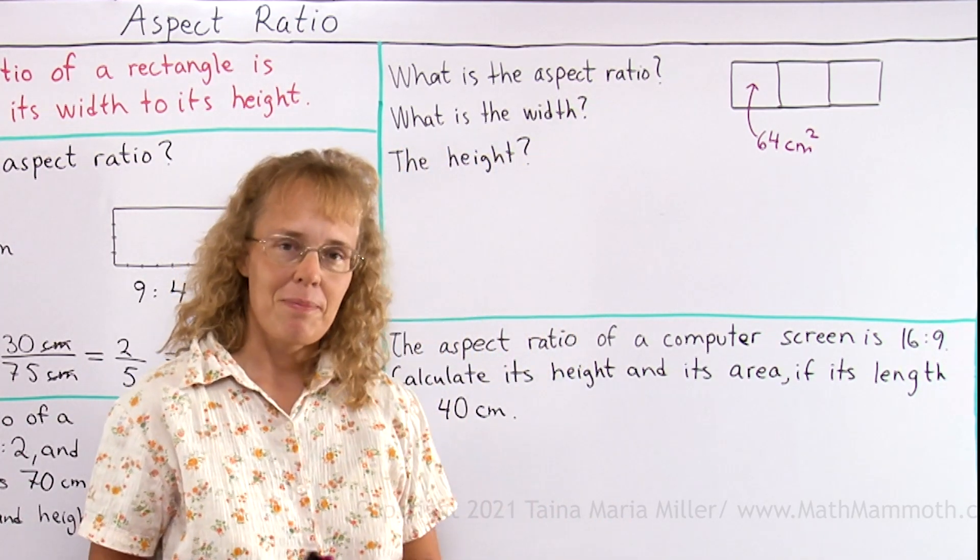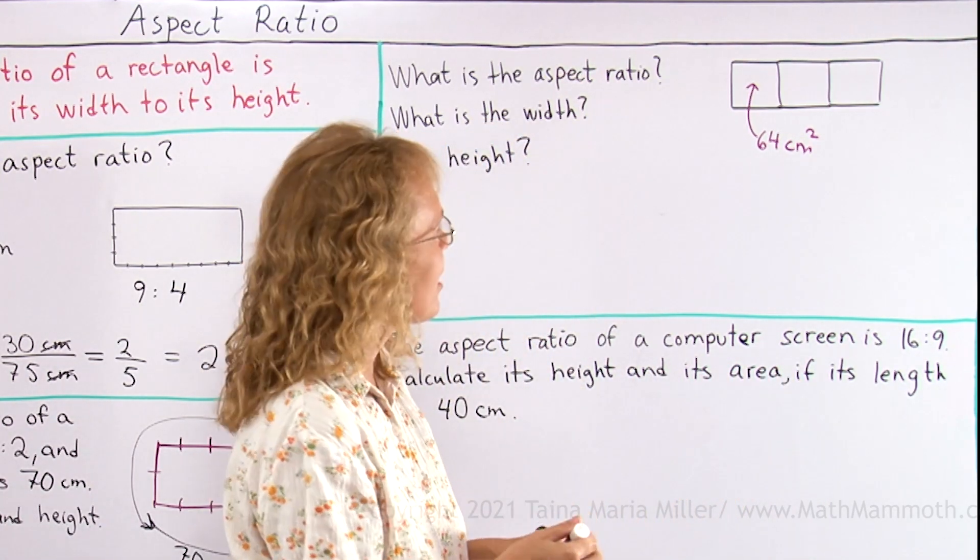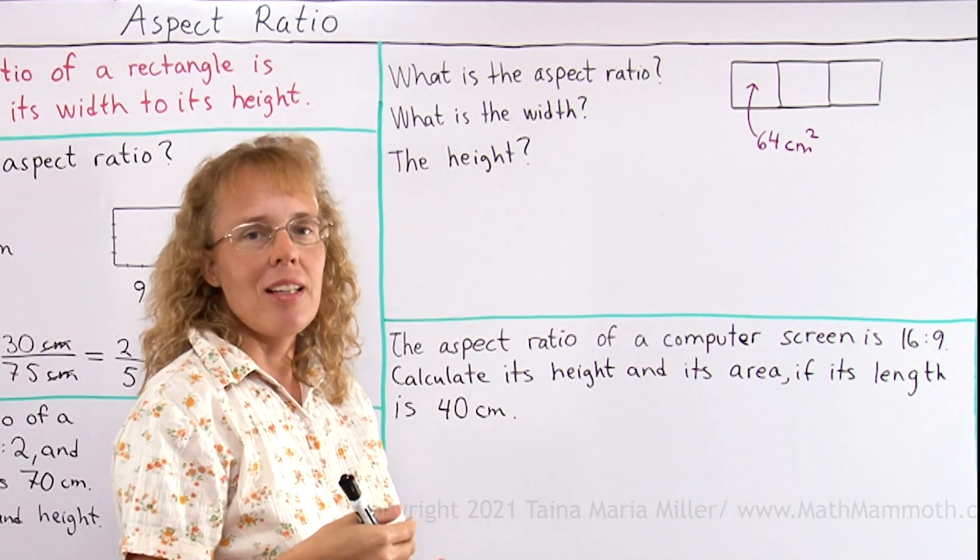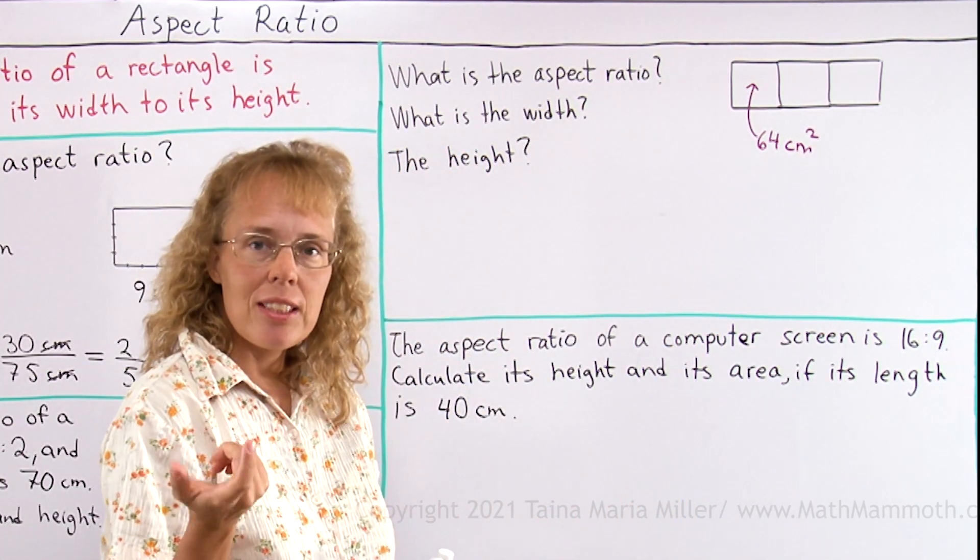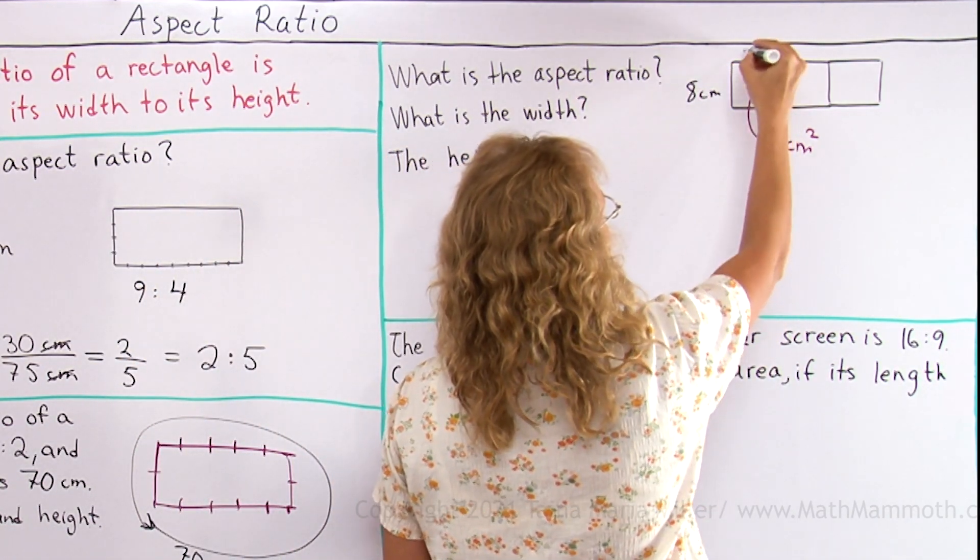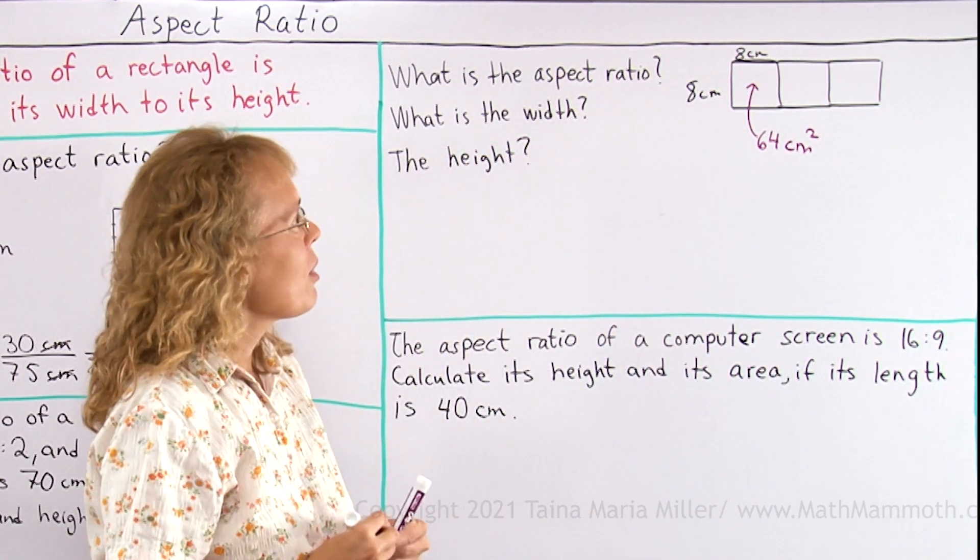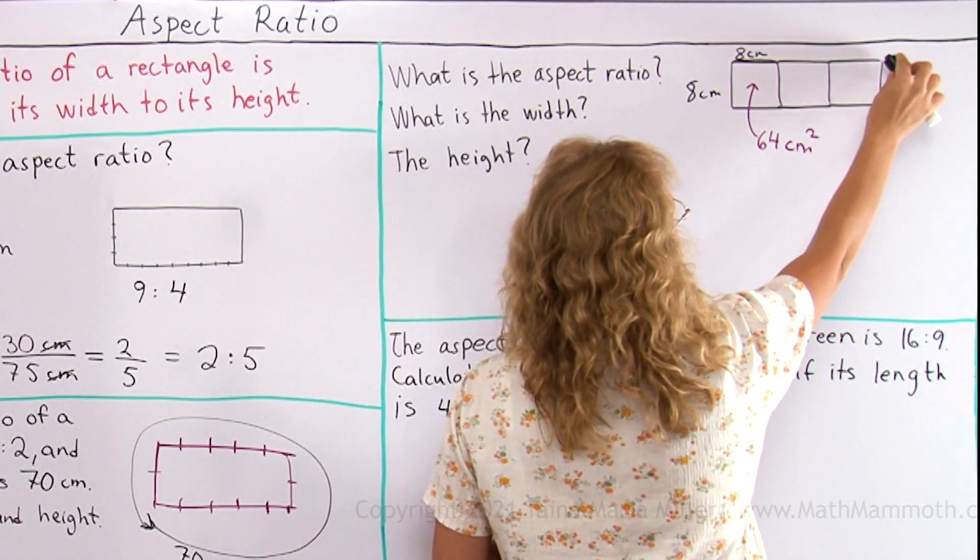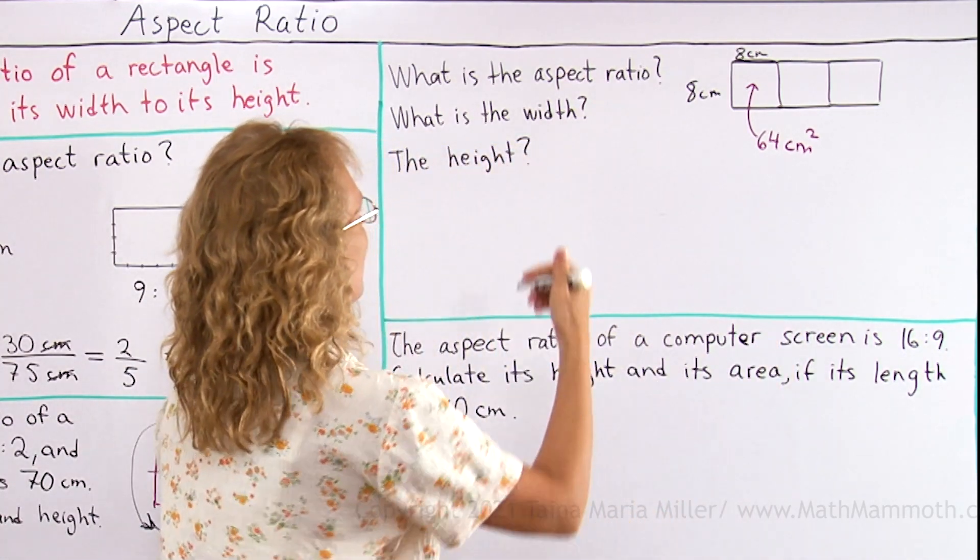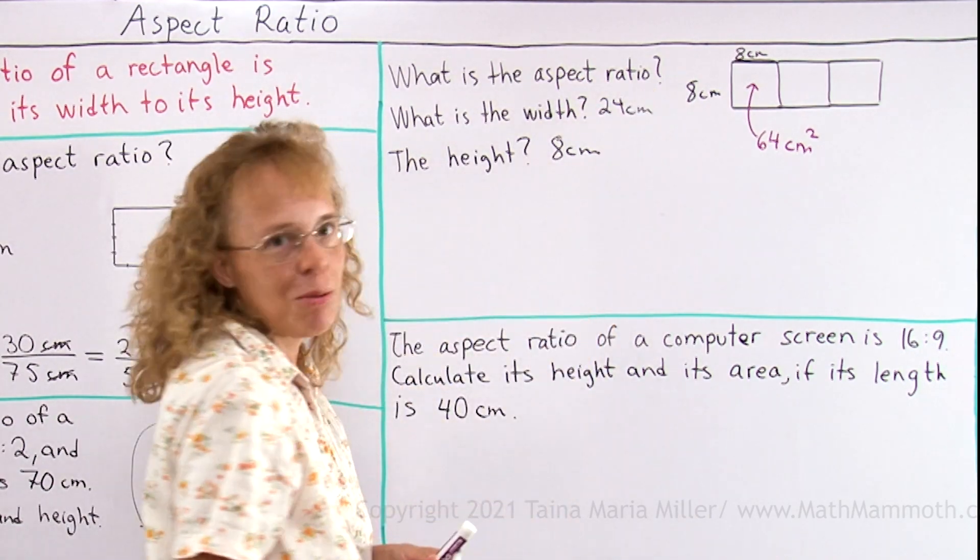So if we know that the area of a square is 64 square centimeters, what can we solve from that? We can solve how much is the side of the square, right? See, this number times this number is the same number multiplied is 64. What number by itself is 64? Well, it is 8, right? So this would be 8 centimeters here. And then this side too is here. So now we know that this rectangle here is 8 centimeters by 24 centimeters. Its height is 8. Its width is 24. See, it wasn't difficult.